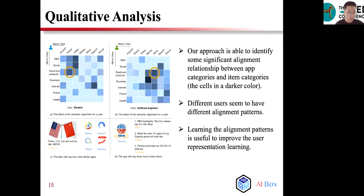Furthermore, we design a case study to verify the effect of category-based semantic alignment mechanism in our model. We present the learned category-based semantic alignment for two sample users in the upper part. Rows and columns correspond to the item categories and the app categories respectively. Our approach is able to identify some significant alignment relationship between app categories and item categories. At the bottom part of the figure, we visualize the similarity relationship between items and apps. It indicates that our approach indeed effectively fuses the semantic spaces in two different views.